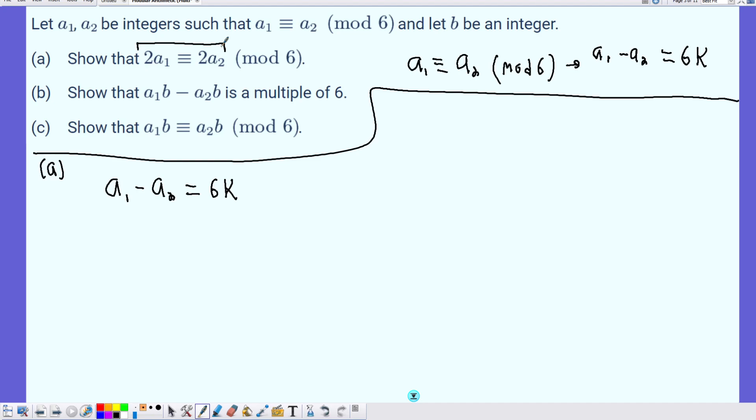What I can do with this equation is just multiply the equation by 2. And what that becomes is we distribute the 2 to A1 to get 2A1, and to A2 to get negative 2A2. And of course, 2 times 6 is 12K. But what we have is that 12 itself is a multiple of 6.